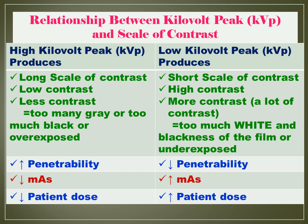Low KVP, or low kilovolt peak, produces a short scale of contrast — high contrast, or more contrast — meaning too much white and blackness on the film, or underexposed. As KVP is lowered for any radiographic examination, the X-ray beam becomes less penetrating, with decreased penetrability and decreased penetrance. As a result, we require higher MAS.